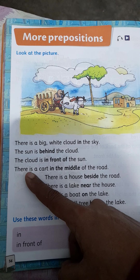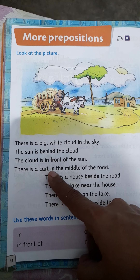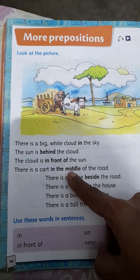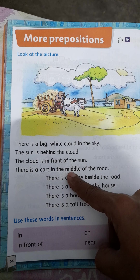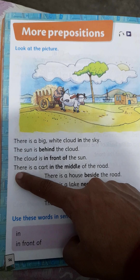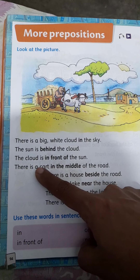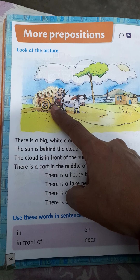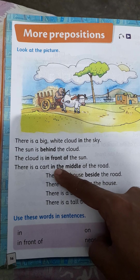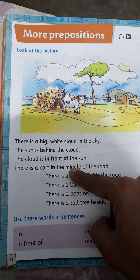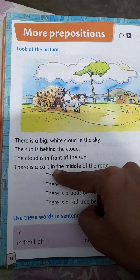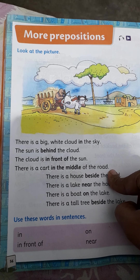T-H-E-R-E there, I-S is, a C-A-R-T cart, I-N-T-H-E in the, M-I-D-D-L-E middle, O-F of, T-H-E the, R-O-A-D road. There is a cart in the middle of the road. Cart means gadi. In the middle means beech may. Road means sadak.